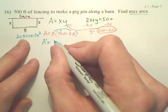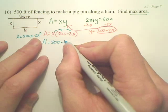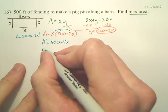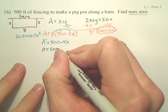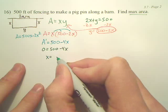So, A prime is going to be 500 minus 4x. If I set this equal to zero, because that's critical numbers, you end up with x equals 125.